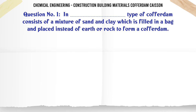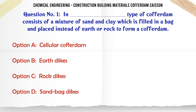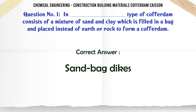Which type of cofferdam consists of a mixture of sand and clay which is filled in a bag and placed instead of earth or rock to form a cofferdam? A. Cellular cofferdam. B. Earth dykes. C. Rock dykes. D. Sandbag dykes. The correct answer is: Sandbag dykes.